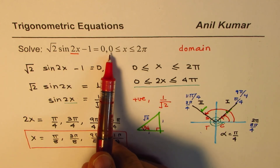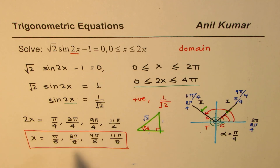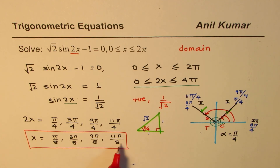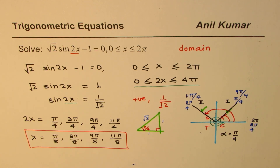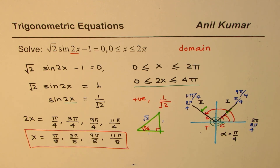Within the domain 0 to 2π we have four solutions: x = π/8, 3π/8, 9π/8, and 11π/8. I am Anil Kumar and I hope this is absolutely clear. You can always share and subscribe to my videos, and feel free to post questions. Thank you and all the best.